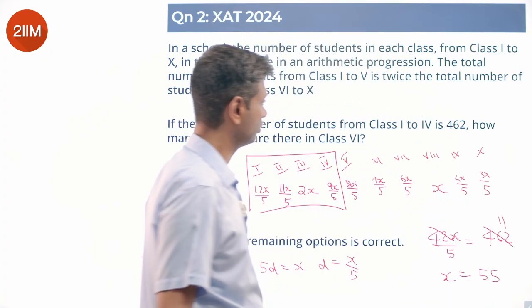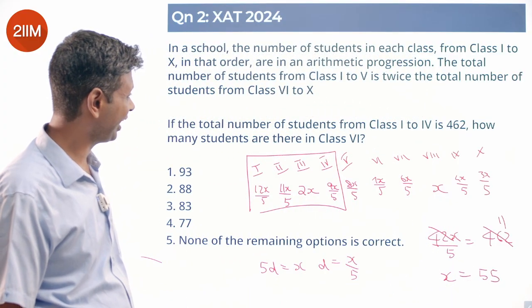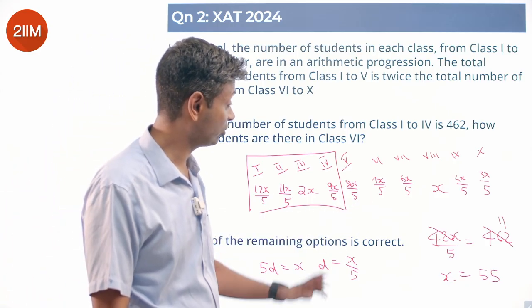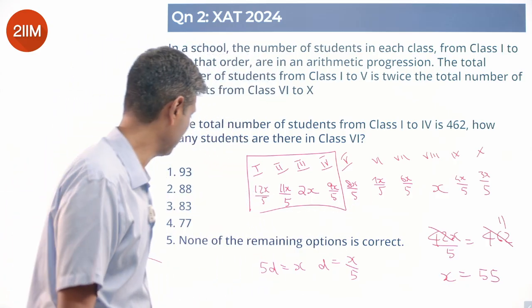Brilliant. So, we have got everything. Then how many students are there in class 6? Class 6 is 7x by 5, 55 into 7 by 5.